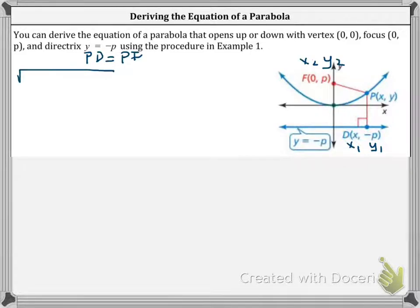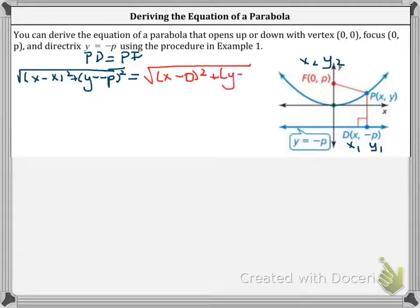So this is the square root of X minus X squared plus Y minus minus P squared equals, on the other side, square root of X minus 0 squared plus Y minus P squared.